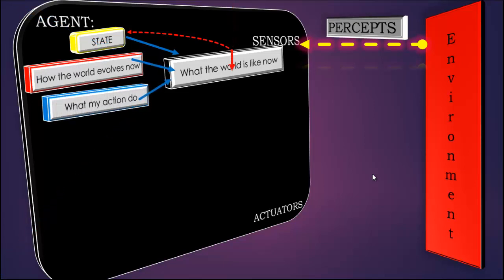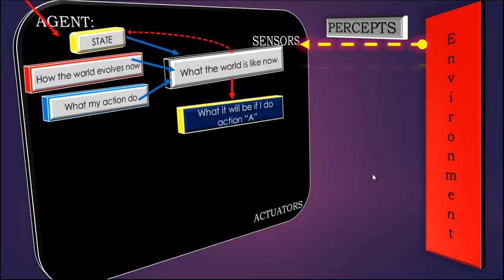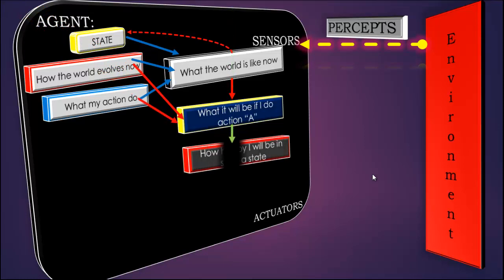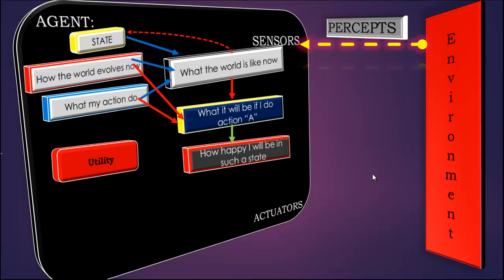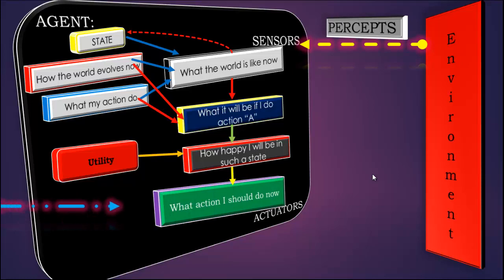Next it evaluates if I take a certain action what will happen, and from the utility function it decides what will be the internal performance of the agent, that is how much happier the agent will be. The agent is trying to satisfy itself. From this process an action is decided which is optimal, increasing the utility of the agent, and that action is informed to the actuators to act upon the environment.